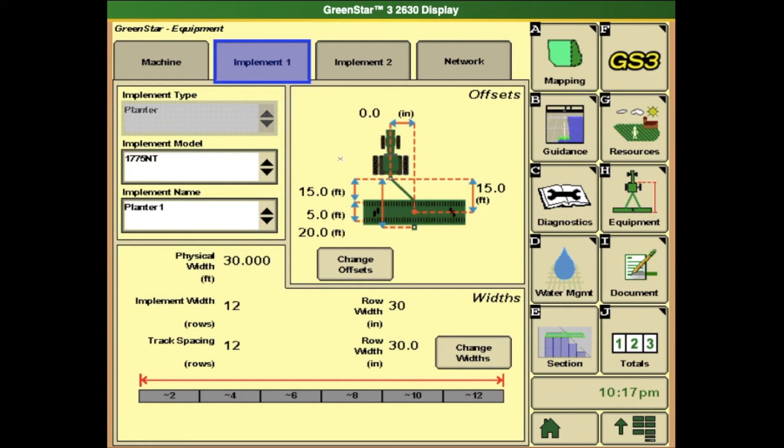In this picture, you can see measurements around the planter. If any of those are incorrect, hit the change offsets button right below the picture.